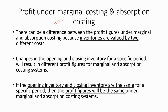Now let's discuss about what is the reason for profit under marginal costing and absorption costing to be different. There can be a difference between the profit figures because inventories are valued by two different costs. Under marginal costing, we value inventories using the marginal cost per unit; under absorption costing, we use the absorption costing per unit. Changes in the opening and closing inventory for a specific period will result in different profit figures. This is the main reason why the profit figures are different.